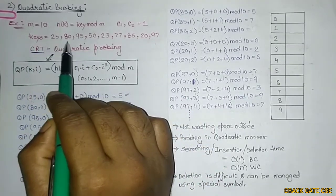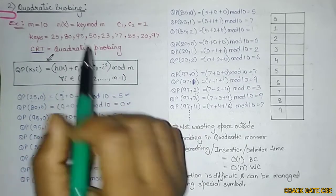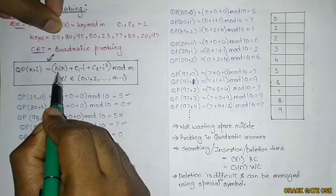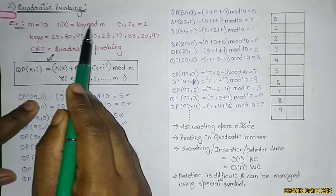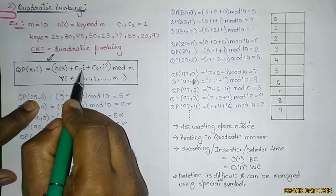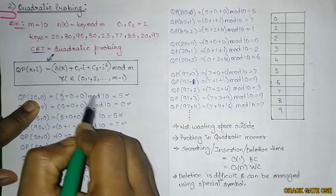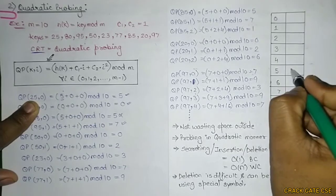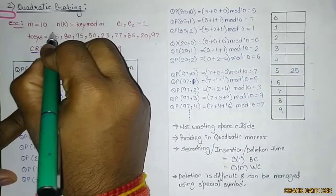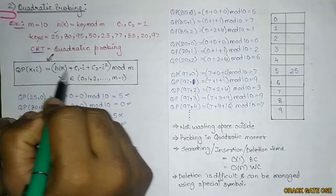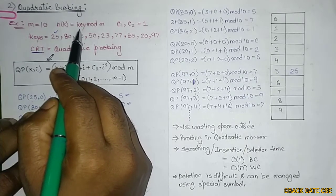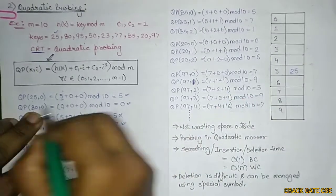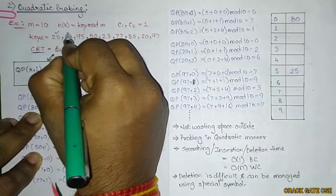We check for each key value which slot to fill. Starting with key=25, i=0: H(25,0) = 25 mod 10 = 5, so 25 is placed at slot 5. Next, key=80, i=0: 80 mod 10 = 0, so 80 is mapped to slot 0.